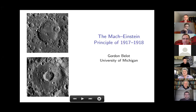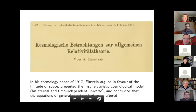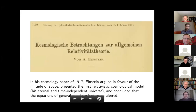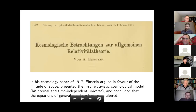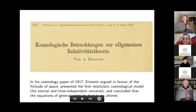So the Mach-Einstein Principle of 1917 and 1918. Here's the background to this paper. I'm interested — maybe you could say obsessed — with Einstein's cosmology paper of 1917. It's a very fascinating paper. One way of thinking of the structure of the paper is: Einstein gives an argument for the finitude of space, that space is finite rather than of infinite extension. Then he goes on and presents the first relativistic cosmological model, his eternal and time-independent Einstein static universe.